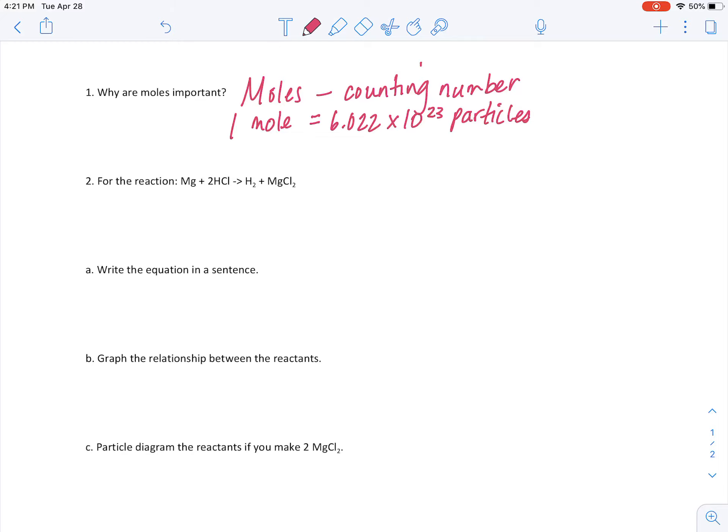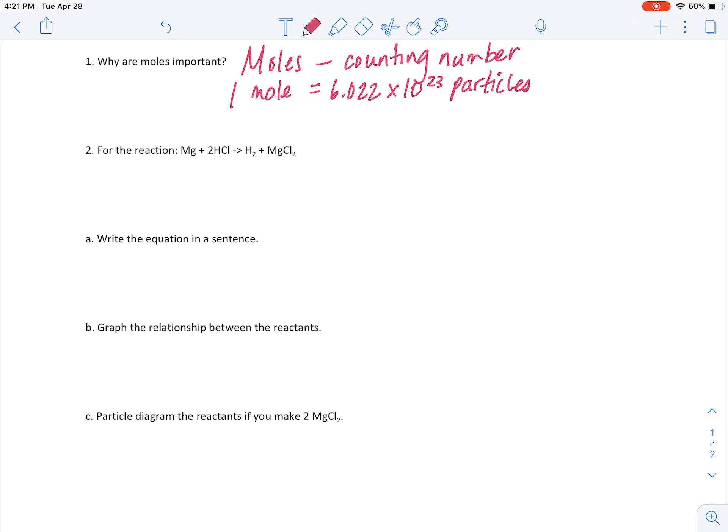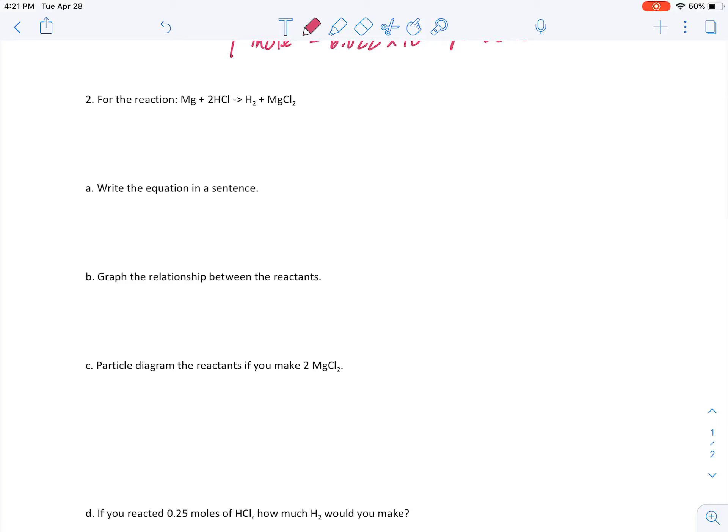So, let's take a look at the chemical reaction. Magnesium plus 2 moles of hydrochloric acid yield 1 mole of hydrogen and 1 mole of magnesium chloride. I'm going to go ahead and just rewrite it here. This is already balanced, as you can see.